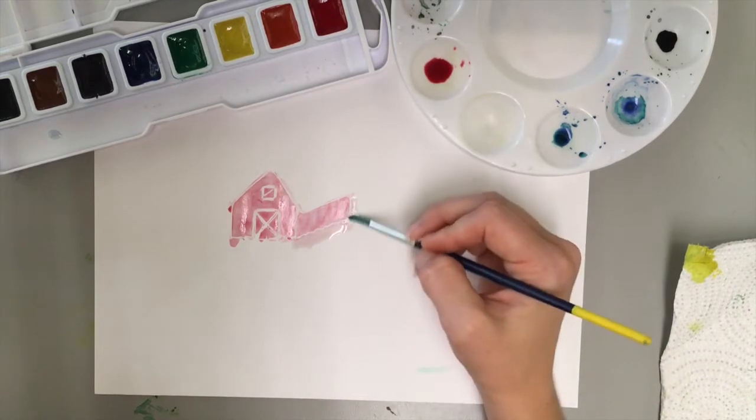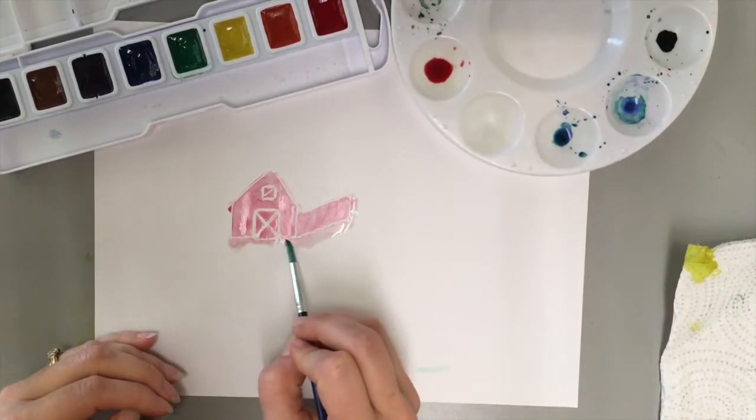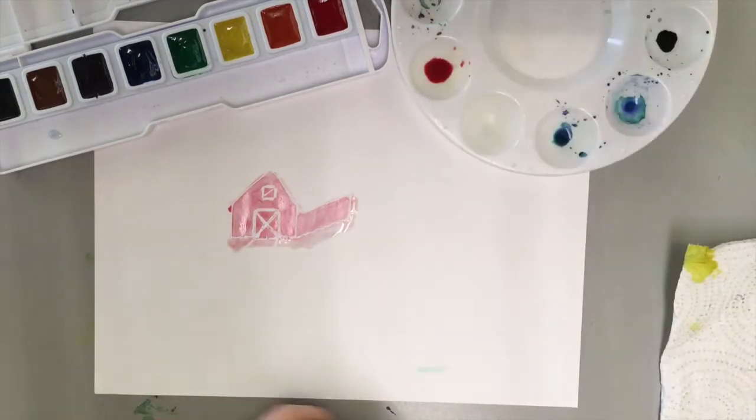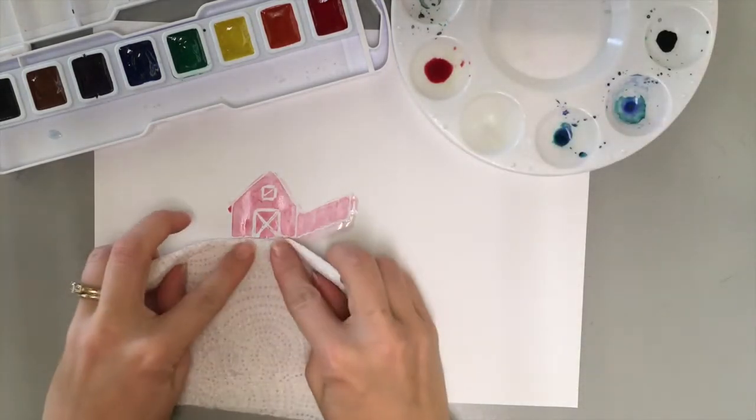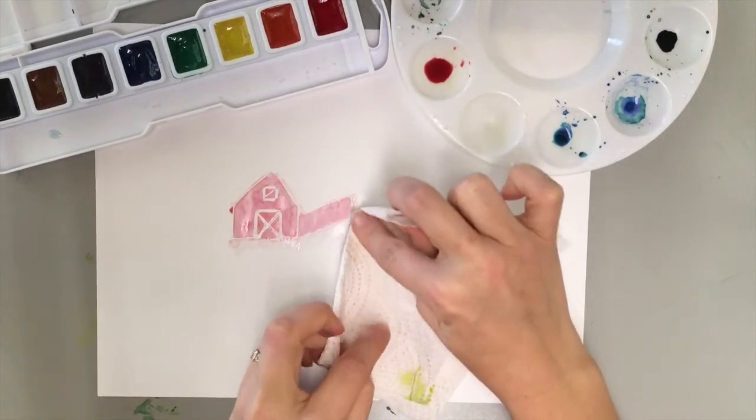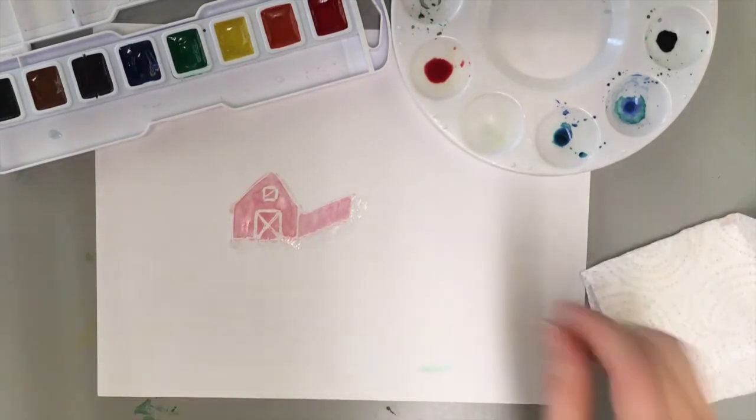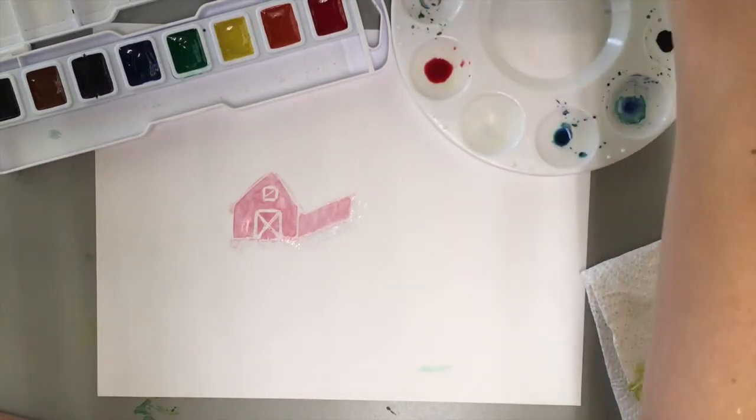It's okay to paint outside the lines. Your first grade or kindergarten teacher is probably freaking out as I say that. If you go outside the lines and you didn't really want to, you can wet it up just a little bit and dab it dry. I'll come back and add some more detail to that later.